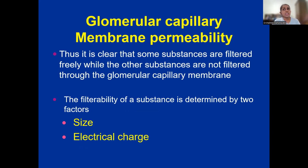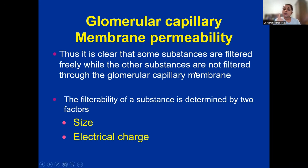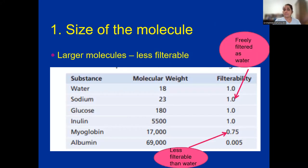Filterability of a substance through the glomerular capillary membrane is determined by two factors. The first is the size of the molecule. Larger molecules are less filterable — this is very obvious. The second factor is the electrical charge of the molecule.